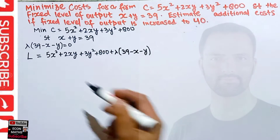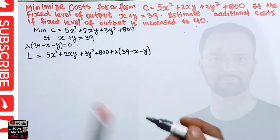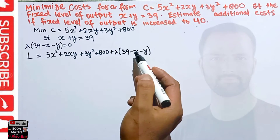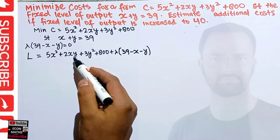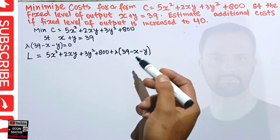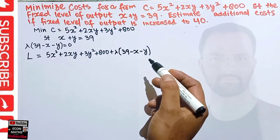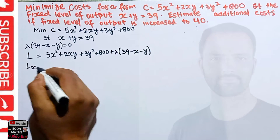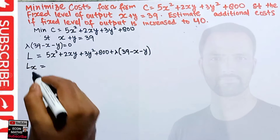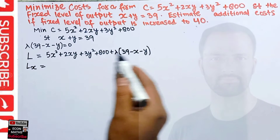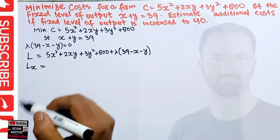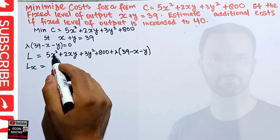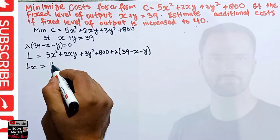To find the optimal values of x, y, and lambda, we need to partially differentiate this Lagrange function with respect to x, y, and lambda, and set them equal to zero simultaneously. First, we partially differentiate with respect to x. The derivative of x² is 2x, so 5·2x gives 10x.